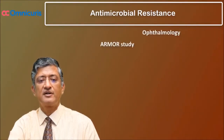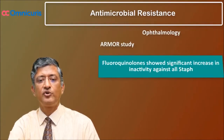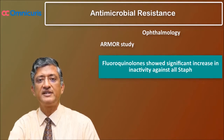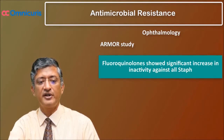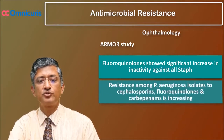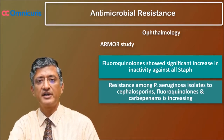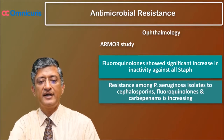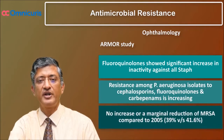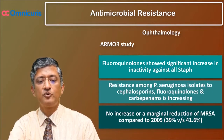The ARBOR study found that fluoroquinolones showed a significant increase in inactivity against all Staph aureus. The resistance among Pseudomonas aeruginosa isolates to cephalosporins, fluoroquinolones, and carbapenems also increased, and this was noted as an important finding of the study. However, the study found that there was either no increase or a marginal reduction in the incidence of methicillin resistance amongst Staph aureus compared to the incidence seen in 2005.